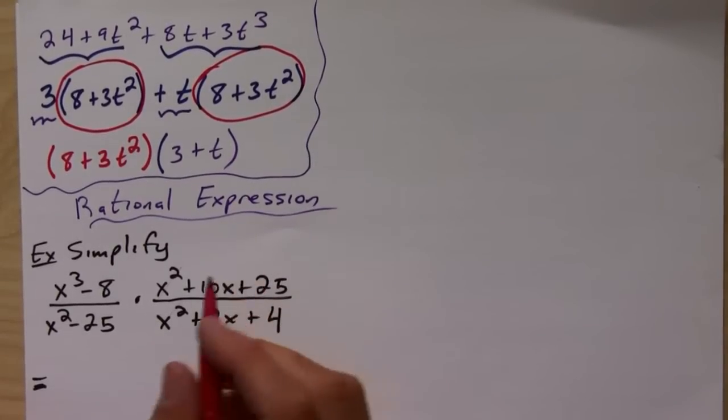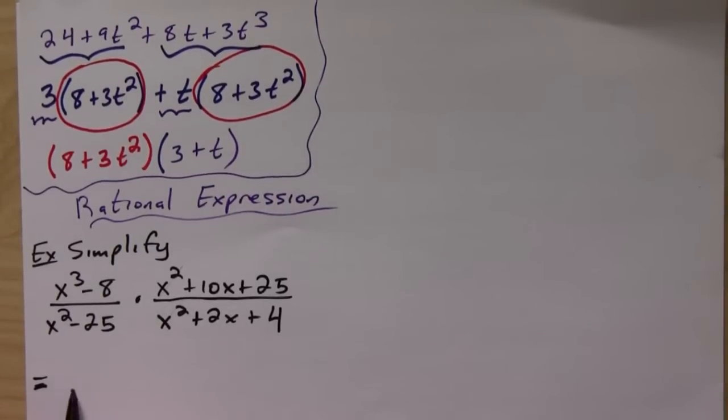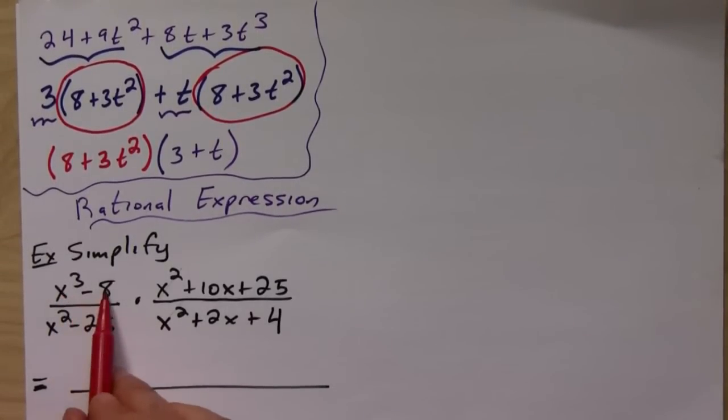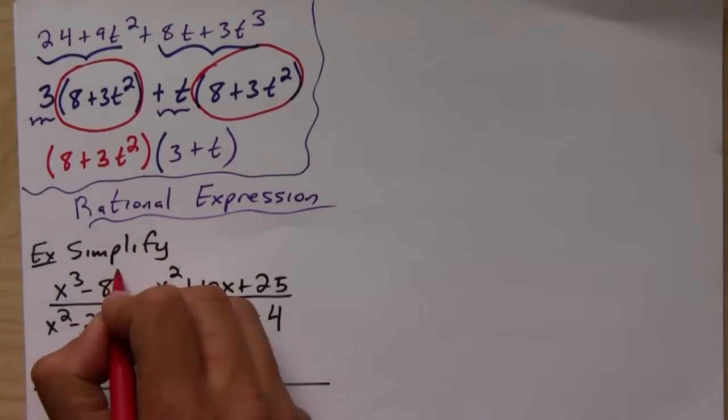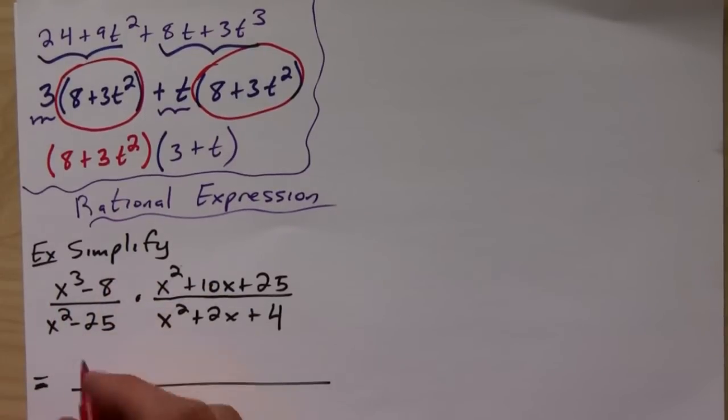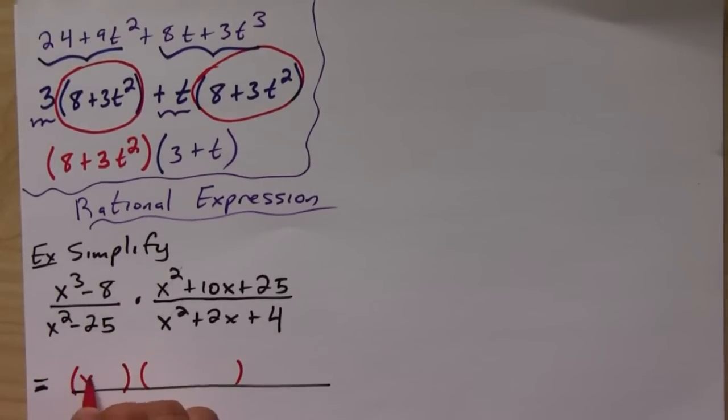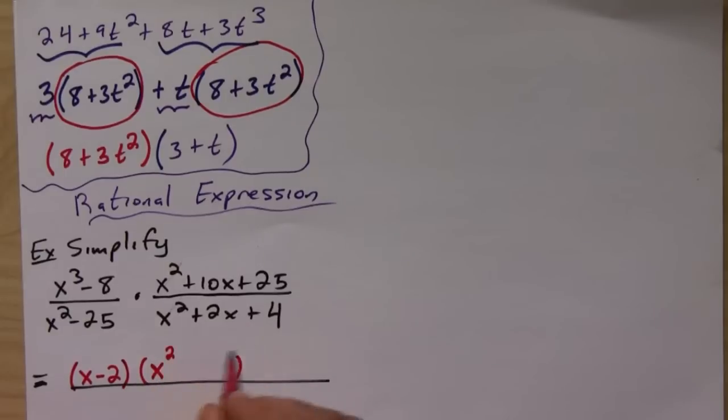So the first step involves factoring everything. And so here x cubed minus 8, well that's a difference of cubes like we just talked about because 8 is 2 cubed. And so if you remember what we just did, this guy factored would be x minus 2...